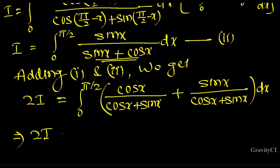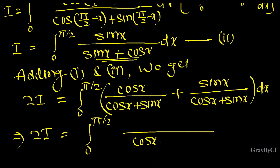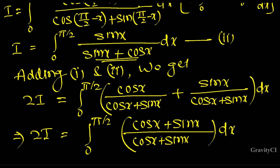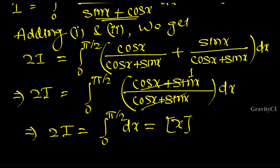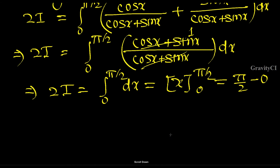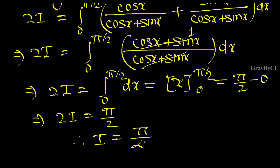Adding the two equations: 2I equals the integral from 0 to pi by 2 of (cos x plus sin x) by (cos x plus sin x) dx, which simplifies to the integral from 0 to pi by 2 of 1 dx. Therefore 2I equals pi by 2, so I equals pi by 4. Hence proved.